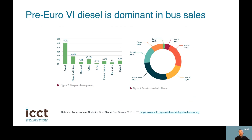Urban transit buses are most commonly powered by diesel engines. A recent UITP survey found that global operators use diesel power, including diesel plus additives and biodiesel, as the most popular engine option by a large margin. The same survey also revealed that most diesel buses use older technologies that only comply with outdated emission standards — in other words, those are pre-Euro 6. We will take a closer look at different emission control technologies and emission standards later in this module and in subsequent modules.